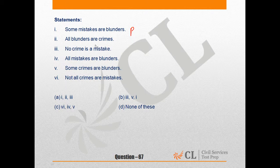Statement 2 says all blunders are mistakes. Again, another positive statement. Statement 3 says no crime is a mistake, which is a negative statement. Now we know that from two positive statements, we cannot have a negative conclusion and vice versa. Hence, option A is incorrect.